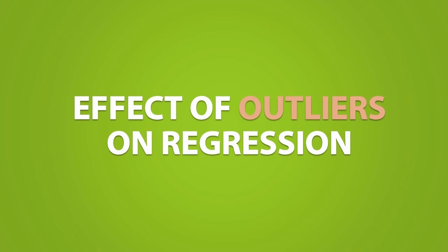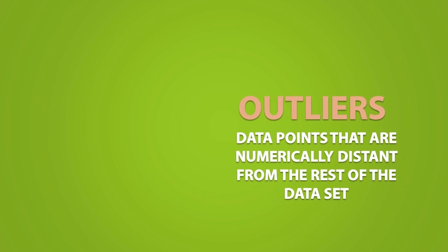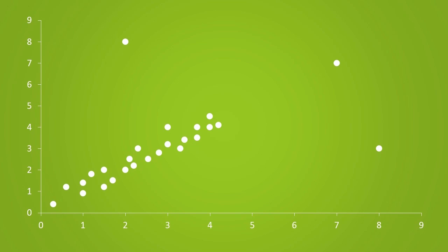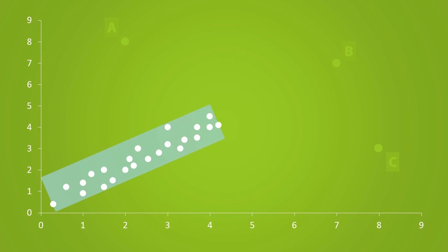The last thing we'll talk about is the effect of outliers on regression. We have already talked about outliers before — they are just data points that are numerically distant from the rest of the dataset. It can refer to a data point that is numerically distant in the Y direction and/or in the X direction. In this graph, we have 3 obvious outliers, which I will label as A, B, and C. This is our main mass of data points, so this would be the modified range for this set of data. The range only refers to the area between the minimum value and the maximum value, and an observation is considered to be an outlier if it falls out of this range.